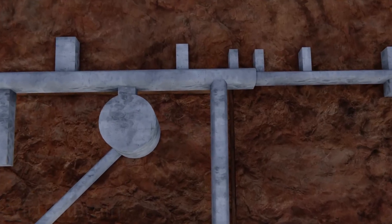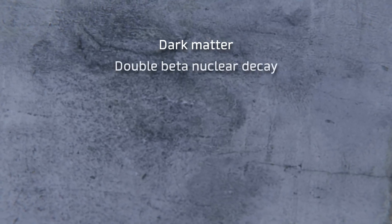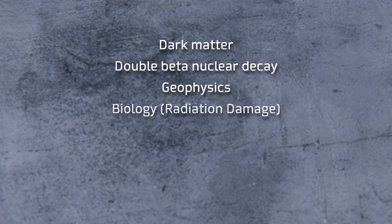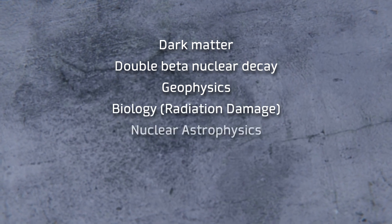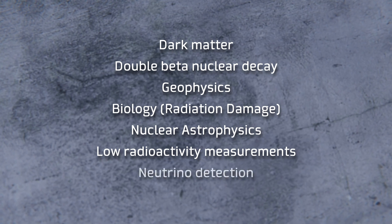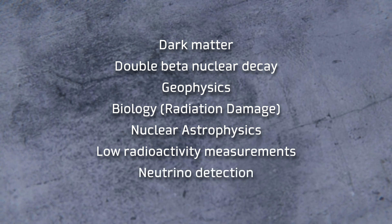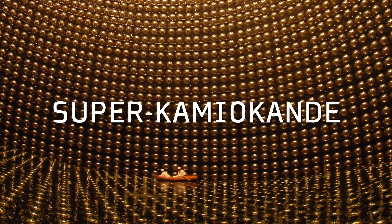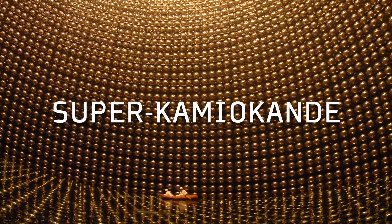Just to name a few, it is expected to be able to investigate the detection of dark matter, double beta nuclear decay, geophysics studies, biology studies related to radiation damage, nuclear astrophysics, low radioactivity measurements, and of course neutrino detection, which we will talk about in more detail in a next video in which we will analyze the Super-Kamiokande, one of the most famous neutrino detectors in the world, located in Japan.